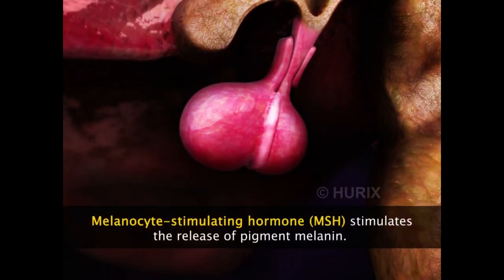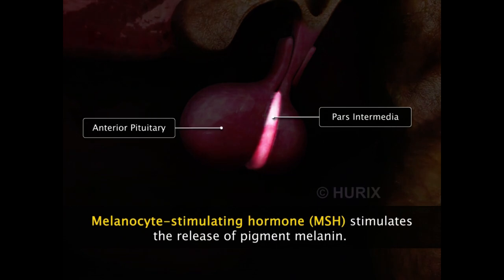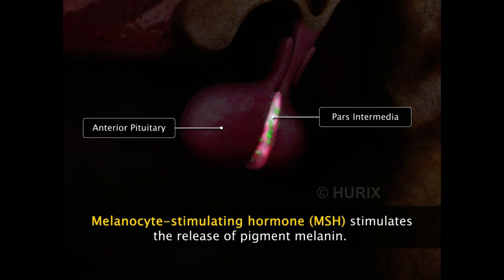Now let's look at hormones produced by the pars intermedia of the anterior pituitary. The pars intermedia produces only one hormone, the melanocyte stimulating hormone, MSH. This hormone stimulates the release of the skin pigment melanin.